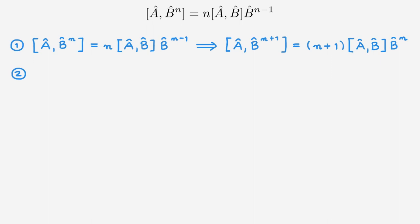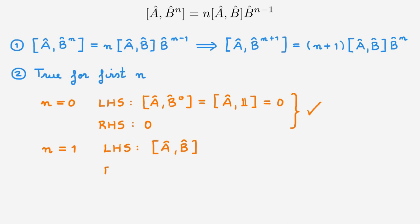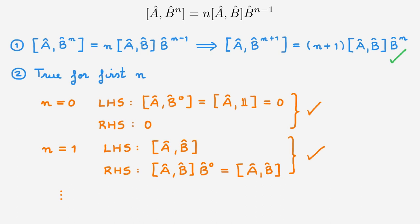The second part of the proof is easier — we check the first few values of n. For n equals 0, the left-hand side is the commutator of A with the identity, which is zero, and the right-hand side gives zero as well. For n equals 1, the left-hand side is simply the commutator [A, B], and the right-hand side also gives the commutator. The relation holds for both base cases. Combined with the inductive step, we conclude that this relation is valid for any n.